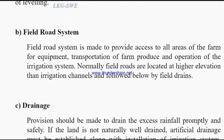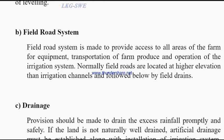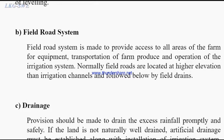Next: Field Road System. A field road is made to provide access to all areas of the farm for equipment, transportation of farm produce, and operation of the irrigation system. Normally, field roads are located at higher elevation than irrigation channels and allowed below by field drains. The construction layout, proper design, and proper requirements must be considered.